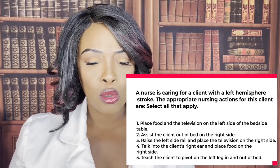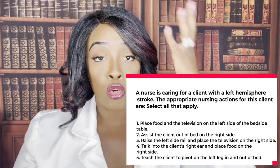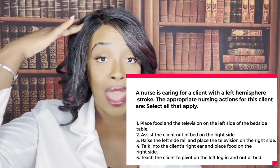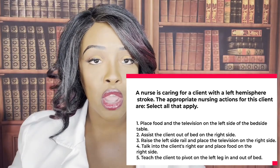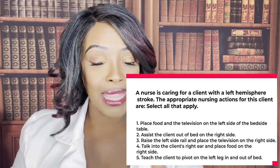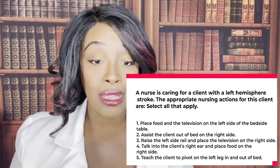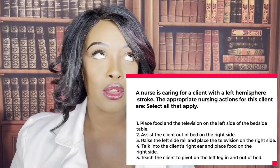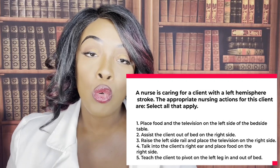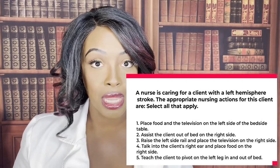If you go back to the question, the patient had a left hemisphere stroke. Remember, if you have a stroke on your left side, the deficiency is going to be on your right. If you have a stroke on your right side, the deficiency is going to be on the left. So since this patient had a left side stroke, we're going to put the television and food on their left side because the deficiency is on the opposite side. We want to make sure they can see their food and the television. True.